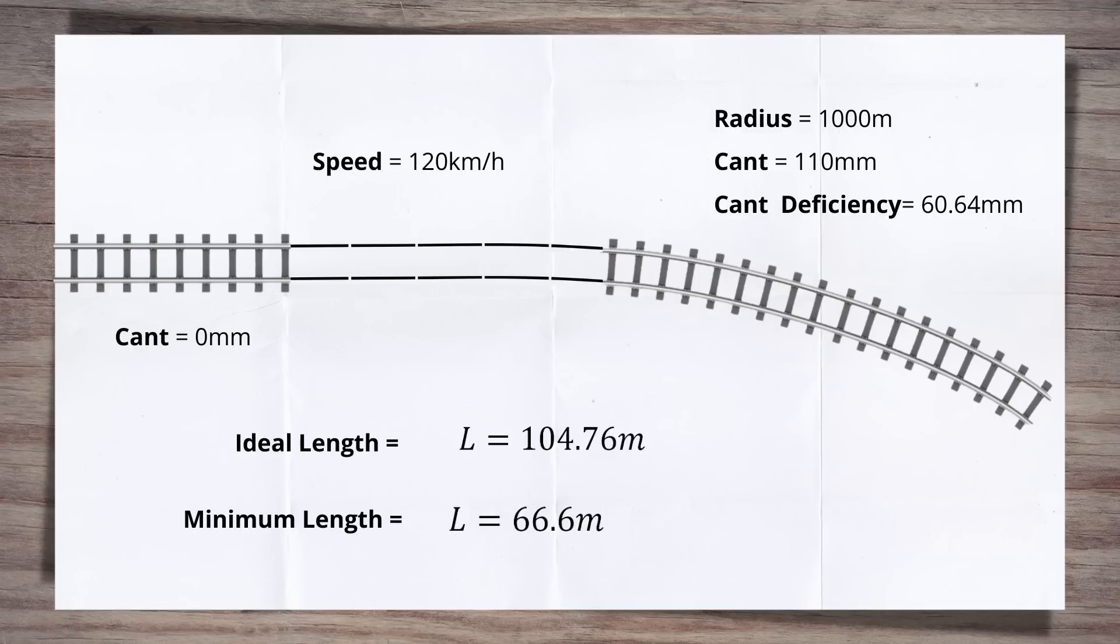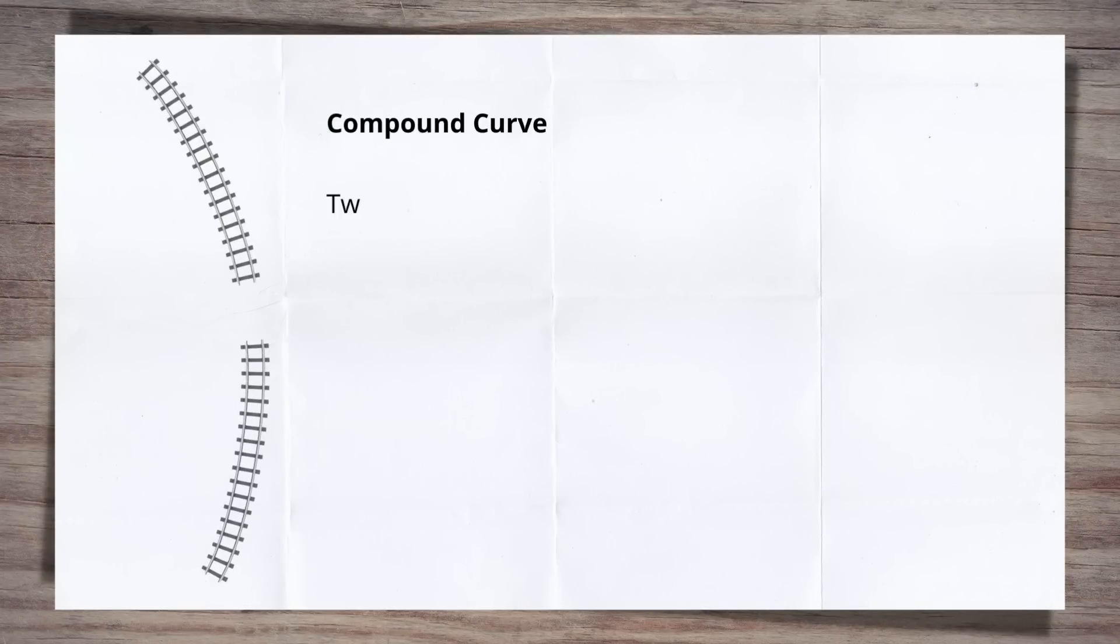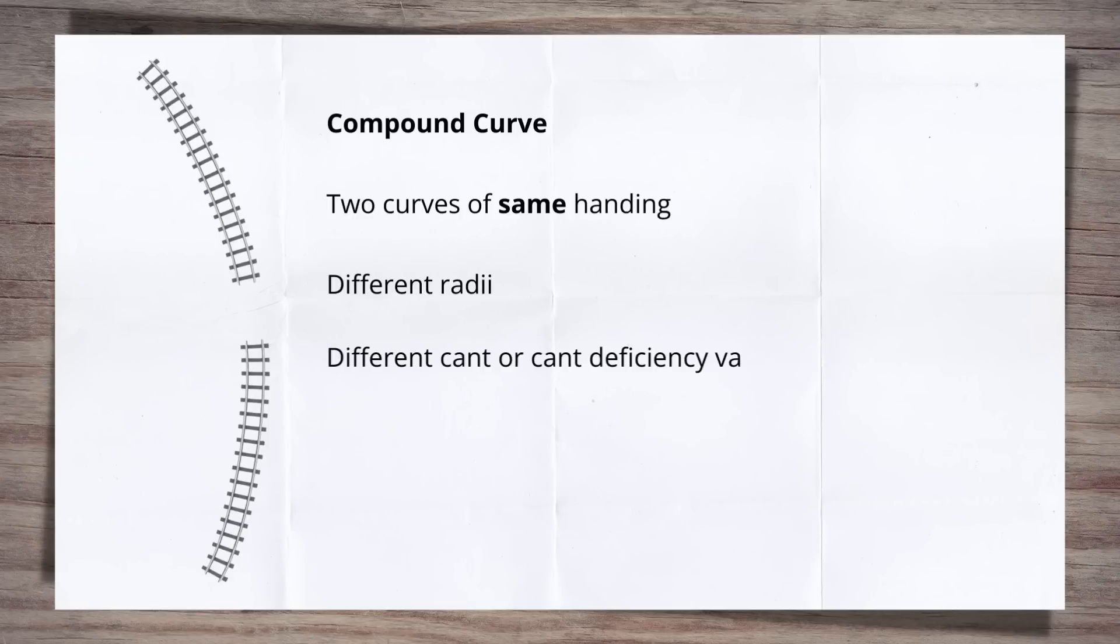This could be for a number of reasons, such as constrained site or tying into an existing section of track. So now you know how to design a transition between a straight and a curve, but not all track is that simple when it comes to its geometry. How do we approach the design of a transition where there are two curves back to back? And what about if they're curving different ways? These are known as compound and reverse curves. A compound curve is two curves in series that are curving or handed the same way. They will have different radii, therefore could have different cant or cant deficiency values, and they are linked by a single transition.